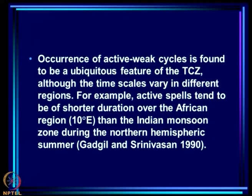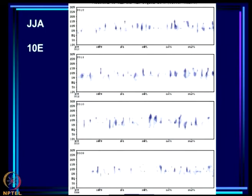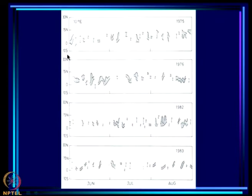For example, active spells tend to be of shorter duration over the African region than over the Indian monsoon zone during northern hemispheric summer. For different years (2009, 2010, 2011, 2012) in the African region at 10 degrees east for JJA, typically only for a few days things are active — a highly fluctuating phenomenon with higher frequency than the Indian region. In 1976 there were much longer active spells over the African region than in 1975, and very big dry spells appeared in 1983.